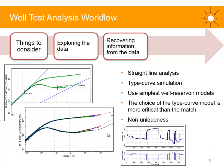The next step is to recover the information from the data using the techniques and tools available. The first thing you can do is a straight line analysis — spot the different flow regimes with straight lines. For example, with wellbore storage, I've got my unit-slope straight line, which gives the wellbore storage coefficient. Then I detect the radial flow regime — the stabilization line — which gives permeability, skin, and the radius of investigation. I spot the boundaries at late time, further away from the well, with an increase in the derivative.